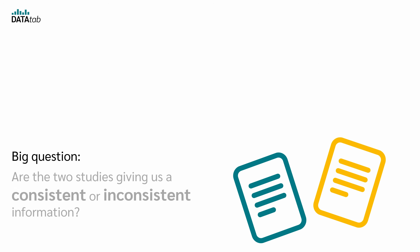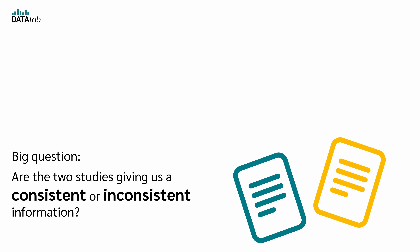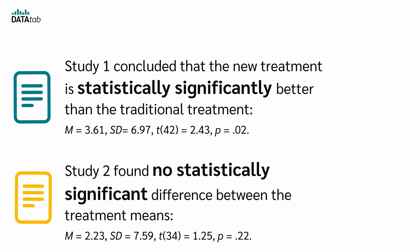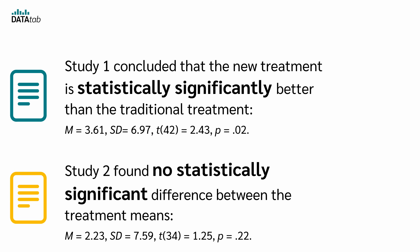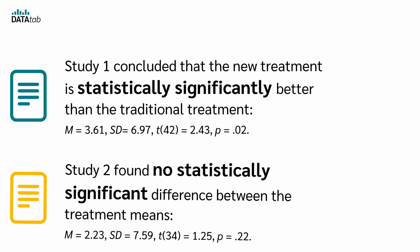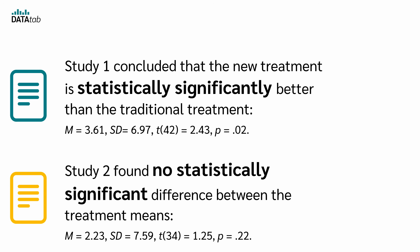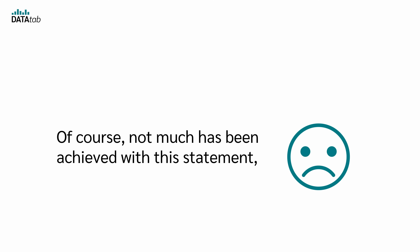The big question is: are the two studies giving us consistent or inconsistent information? Is the new treatment effective? One interpretation could be: Study 1 is statistically significant at the 0.05 level, but Study 2 is not. Therefore, the two outcomes conflict. Of course, not much has been achieved with this statement — let's see if we can do better.